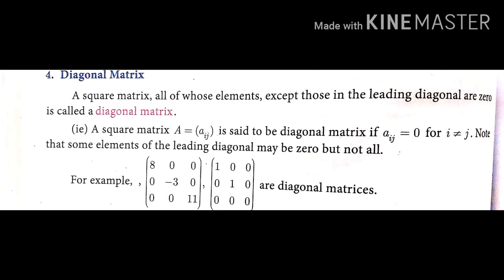For example, the matrix [8, 0, 0; 0, -3, 0; 0, 0, 11] — the diagonal contains numbers 8, -3, and 11, while all upper and lower off-diagonal elements are zero. This type of matrix is called a diagonal matrix.